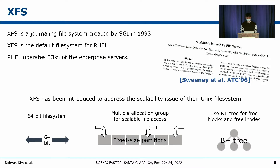One of the most widely used journaling file systems in Linux is XFS. XFS was created by SGI in 1993 and is the default file system for Red Hat Enterprise Linux. XFS was introduced to address the scalability issues of the Unix file system. It supports a 64-bit file system and partitions the disk layout into fixed-size regions for scalable file access, and employs B+ trees to efficiently manage free blocks and free inodes. However, XFS is no longer as scalable on modern hardware as it once was.